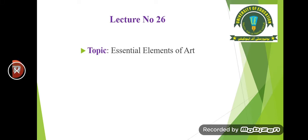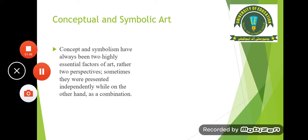It is very important to note what are the important elements of art — conceptual and symbolic art. Concept and symbolism are two very important elements of any kind of art. Concept and symbolism have always been two highly essential factors of art — two perspectives. Sometimes they were presented independently, while on the other hand as a combination. Sometimes we have a specific concept and we use it in our paintings, and sometimes we use symbols individually.